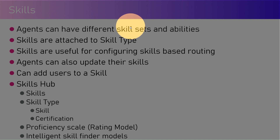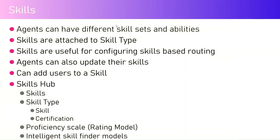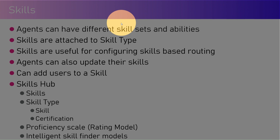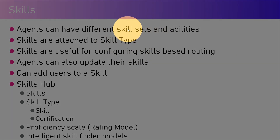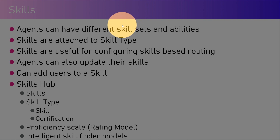If you have a five-member team and all of them specialize in Power BI, you can have ratings attached to those skills. There is a proficiency scale, which is basically a rating model that allows you to rate skills. For example, out of five agents, two might be proficient in Power BI, one might be good, and one might be at a novice or beginner stage.